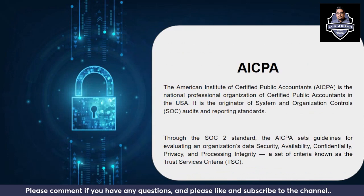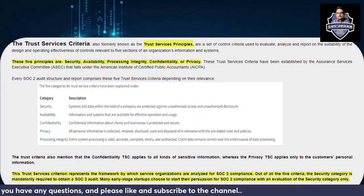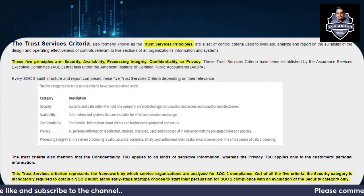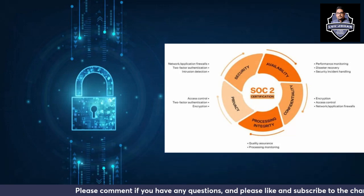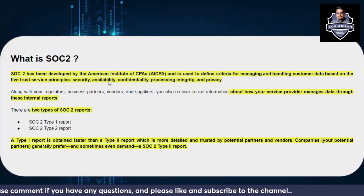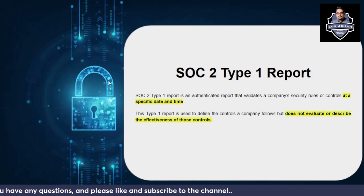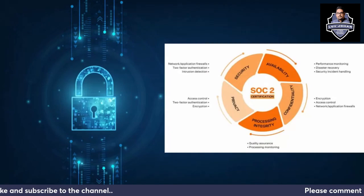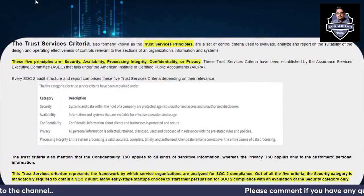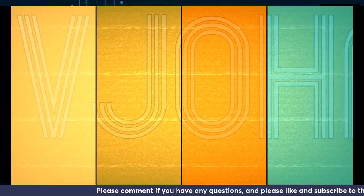We also discussed what is AICPA. Now in this Part 2 video we will discuss the main things: what are the Trust Services Criteria, what are the Trust Services Principles, what controls should be implemented, and what is SOC 2 Type 1 report and SOC 2 Type 2 report. Stay tuned and please like the videos so that I get the motivation to create more videos like this.